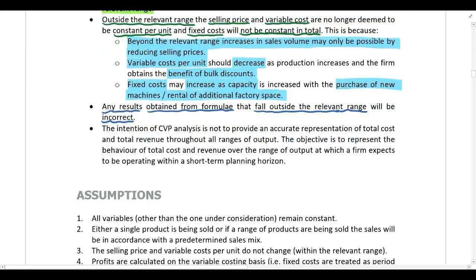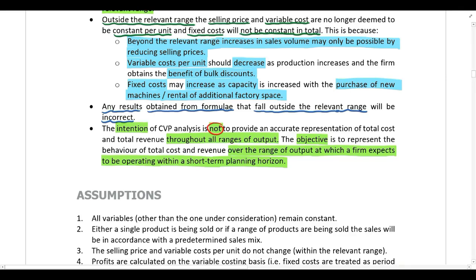Is this then a limitation of CVP analysis? No, definitely not, because our intention is not to perform calculations throughout all ranges of output. Our objective is to perform these calculations over the range of output at which the firm expects to be operating within a short-term planning horizon — in other words, within the relevant range or normal operating range. That is the range the firm expects to operate in, so this is not a limitation, just something we need to be aware of when performing our calculations.